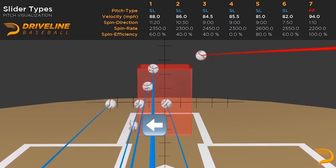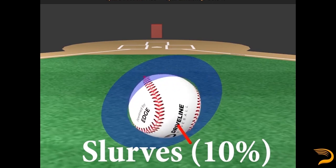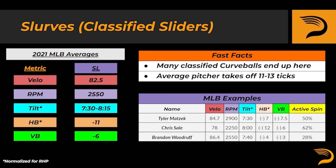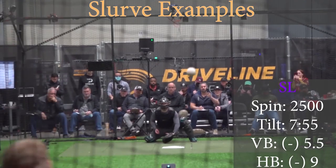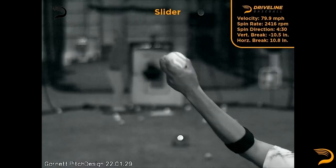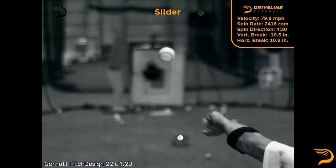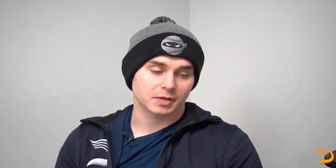Our final slider variant comes from the curveball family — the slurve. Most slurves come from classified curveballs, though 10% of classified sliders fit this movement profile. On average, a classified slider that landed as a slurve was thrown 82.5 mph. While the pitch has similar active spin to the sweeper, it isn't as effective of a pitch due to its relative lack of sweep and two-plane movement. While it's often suboptimal for most arsenals, pitchers such as Tyler Matzek, Chris Sale, and Brandon Woodruff have featured it and had plenty of success at the big league level. The most distinguishable difference is that the middle finger gets in front of the ball at release, resulting in much more topspin relative to our other slider variants, along with a proportion of both sidespin and gyrospin.